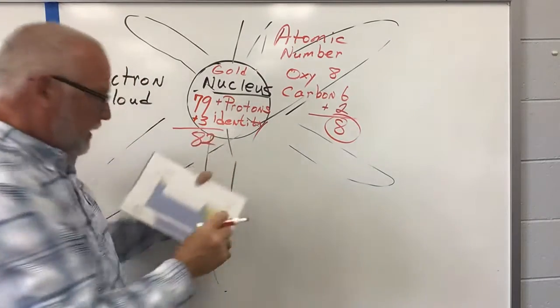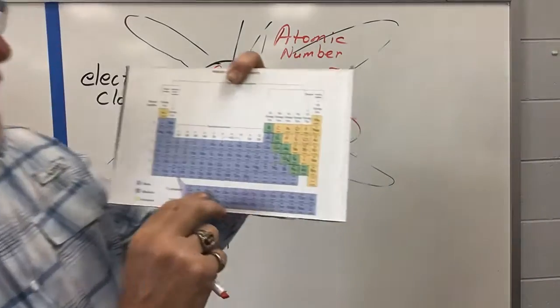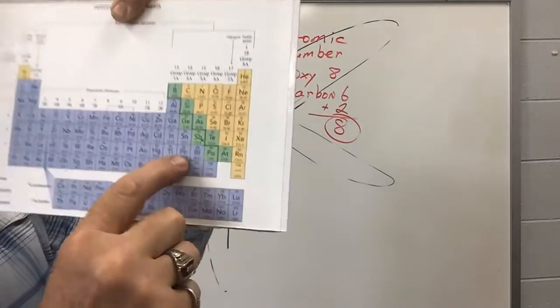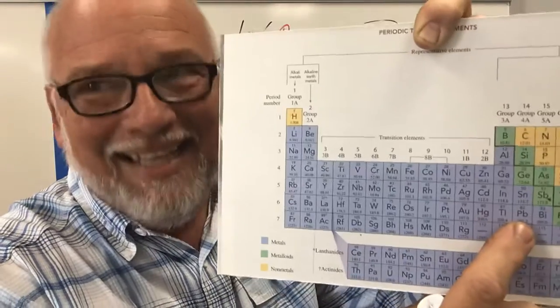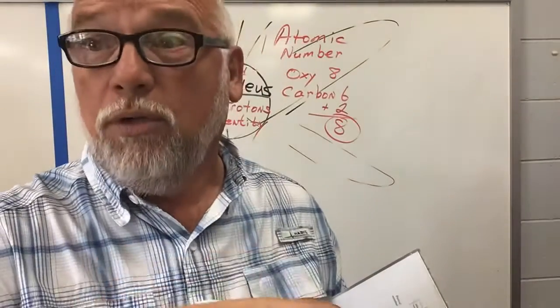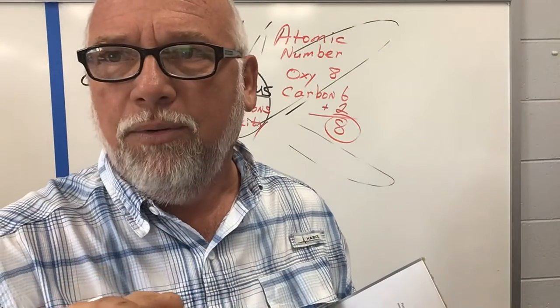Now, we go to our periodic table of the elements, and we look up 82, and it's PB, plumbum. That's a Latin word for lead. We have just turned gold into lead. I don't think that's something you want to do.